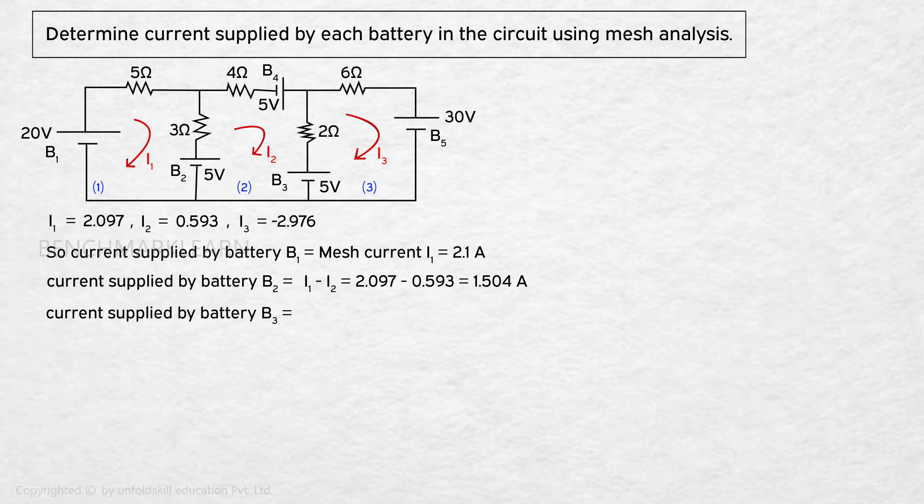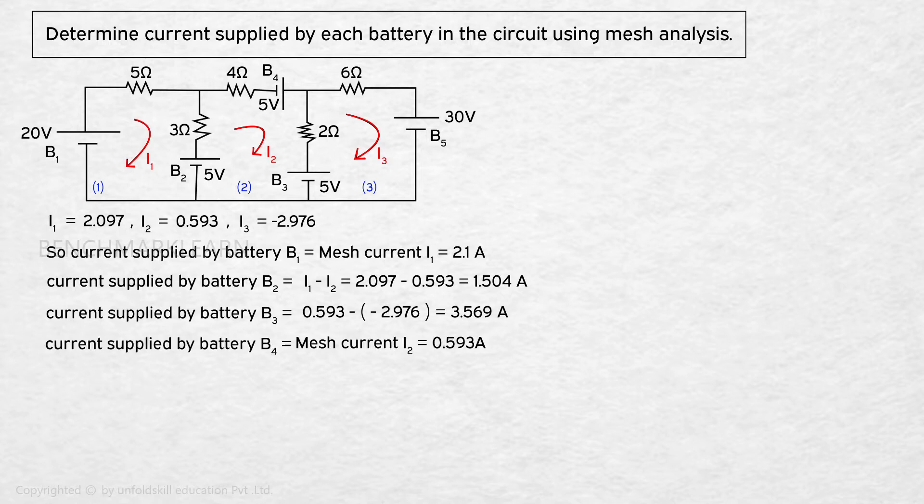Current supplied by battery B3 equal to difference of mesh current I2 and I3 since B3 is present between mesh 2 and mesh 3, that is equal to 0.593 minus minus 2.976 which will give you 3.569 ampere.